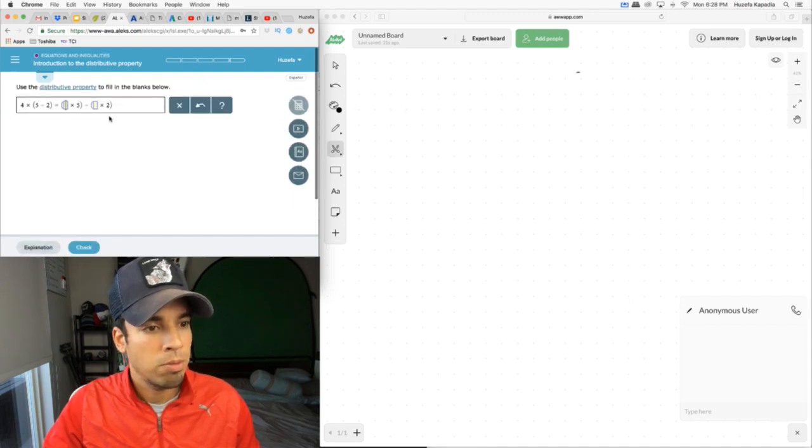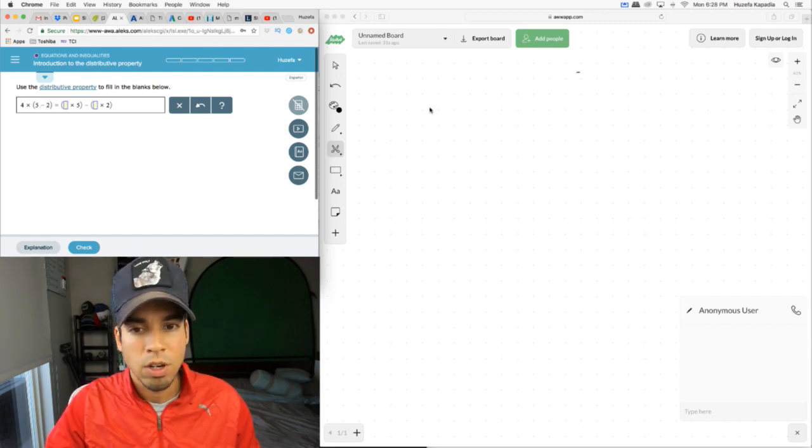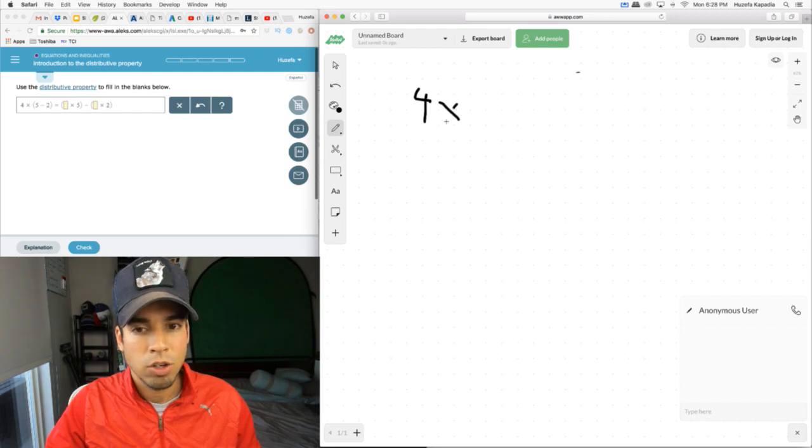The distributive property says that when we multiply something in brackets like this, whether it's subtraction or addition, let me show you what happens here.